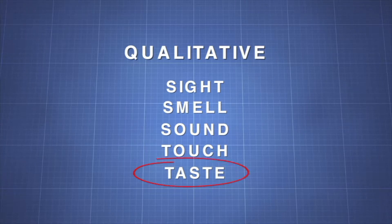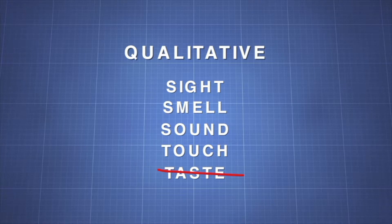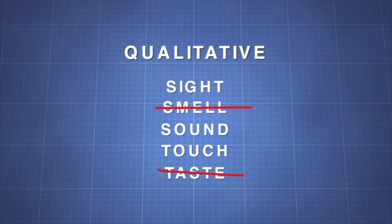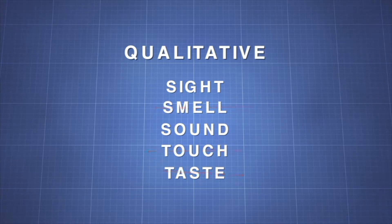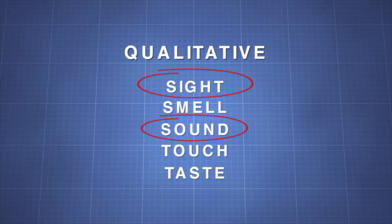Unless a taste test is part of the experiment, taste is not generally used for observation. Likewise, a good experimenter will take care when using smell to avoid breathing noxious fumes. Touch should be avoided if chemicals or heat is used, but it can be useful for some observations. Typically, sight and sound are the most useful senses for qualitative observations.